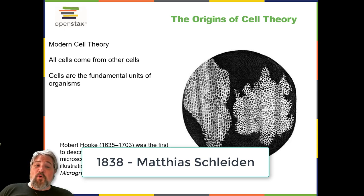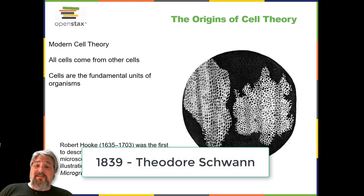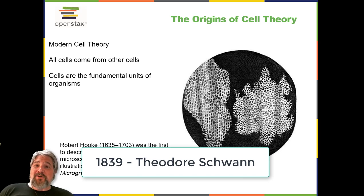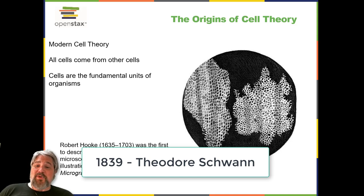Schleiden believed that cells formed through crystallization rather than cell division. Theodor Schwan (1810–1882), a noted German physiologist, made similar microscopic observations of animal tissue. In 1839, after a conversation with Schleiden, Schwan realized that similarities existed between plant and animal tissues.